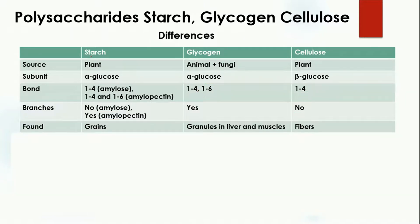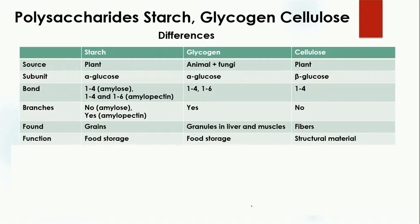Starch can be found in grains, tubers, or any plant source. Glycogen is present in granules found in the liver or muscles. Cellulose is present in fibers and is also a part of the cell wall.